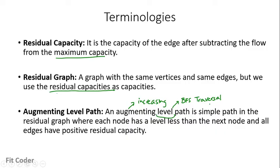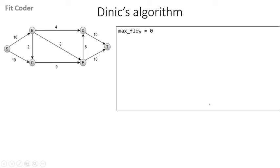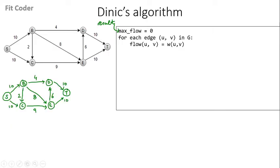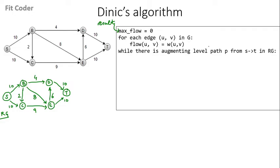Now let's look at the pseudocode. We have a maximum flow variable where we save the result — this will give us the maximum flow. For each edge UV in the graph, we set the flow equal to the weight of the edge to create the residual graph. Then the next step is: while there is an augmenting level path from S to T in this residual graph, we process it.